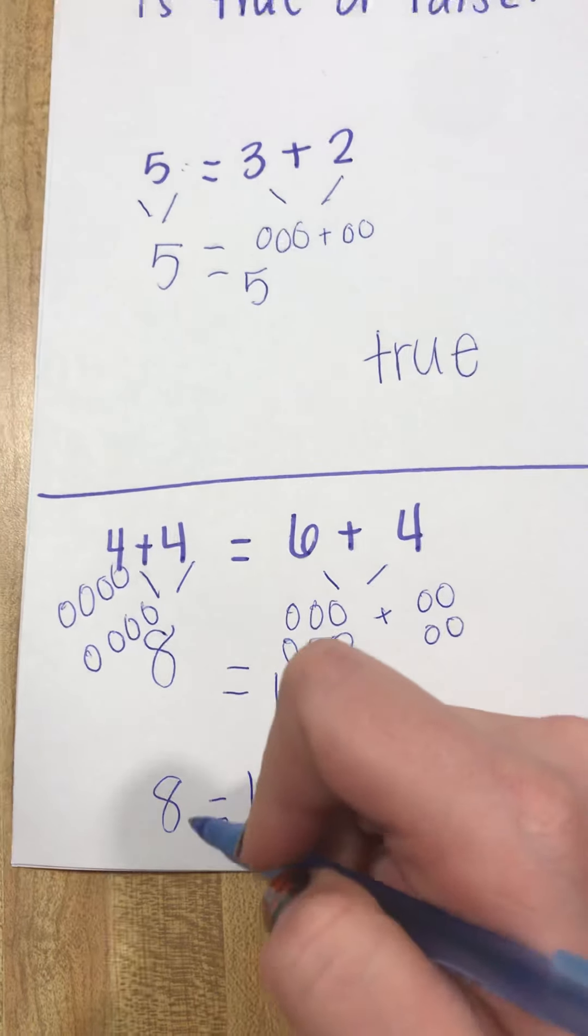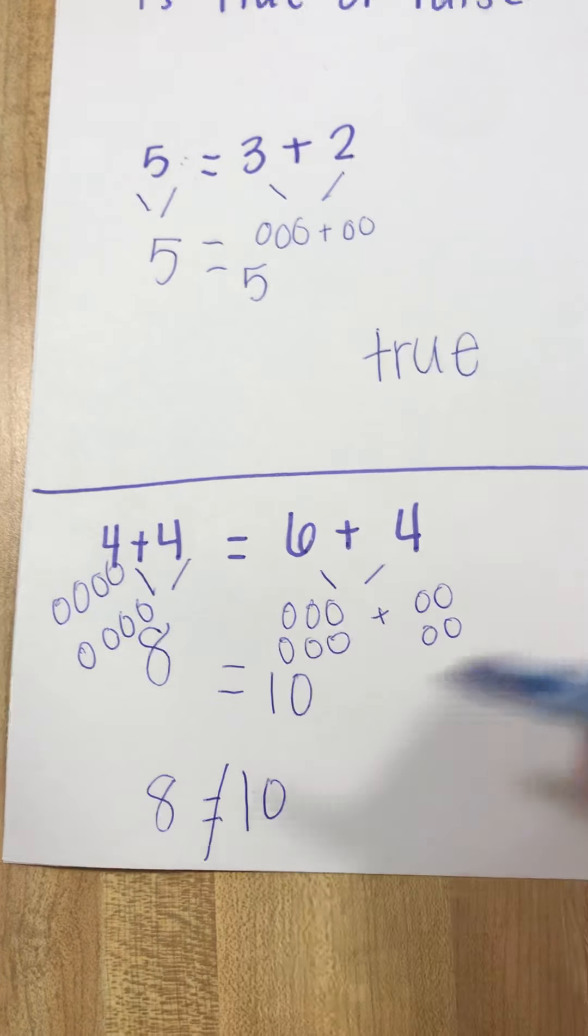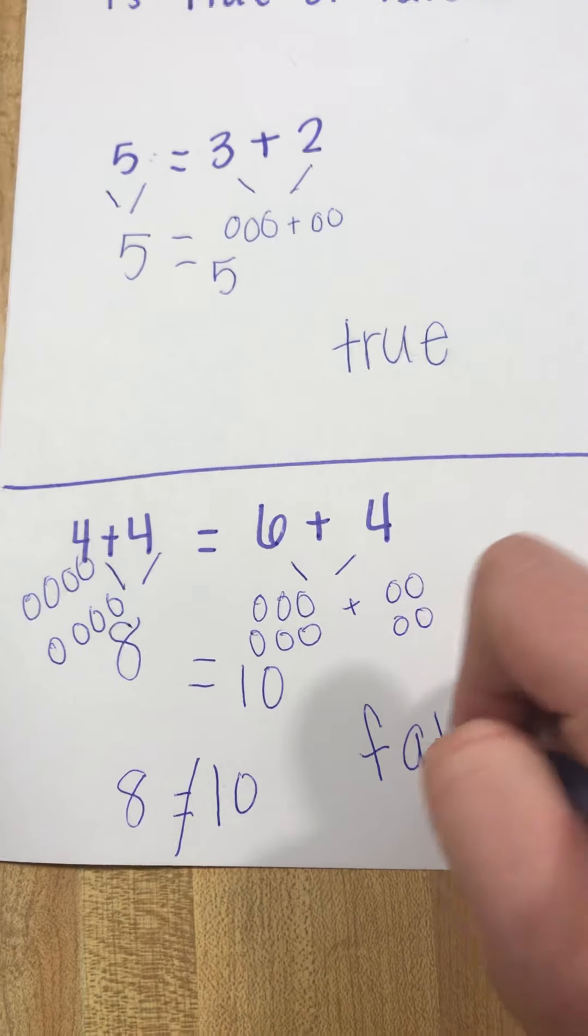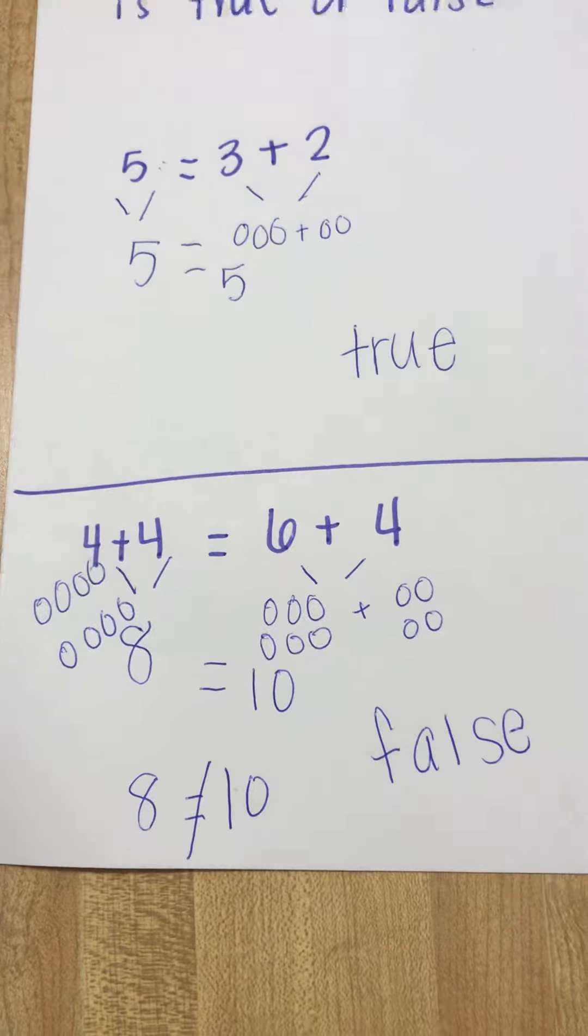That's not true. So we have to put a slash through the equal sign, so that means eight does not equal ten. And then we can put F for false.